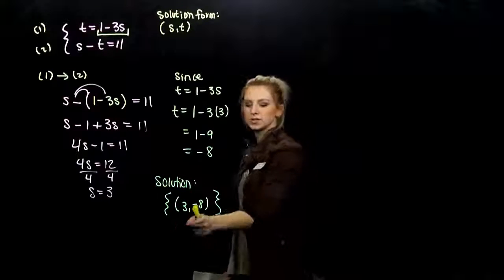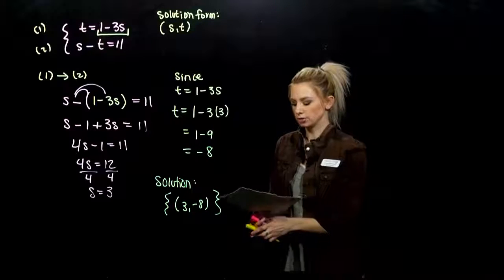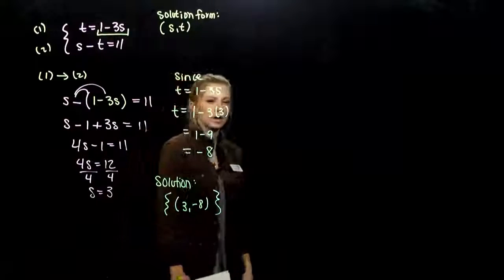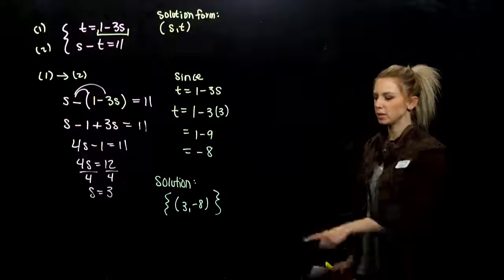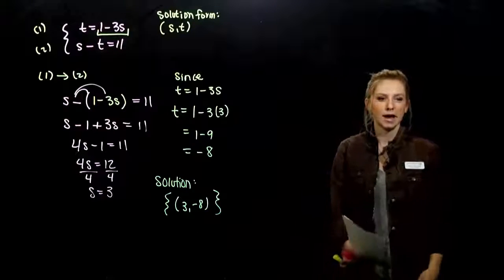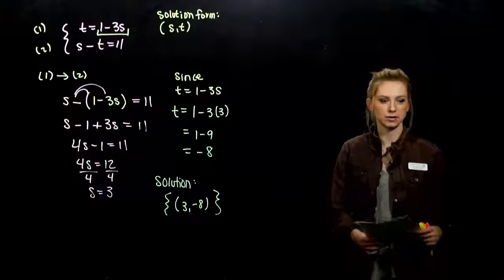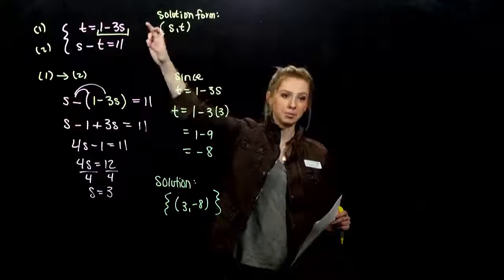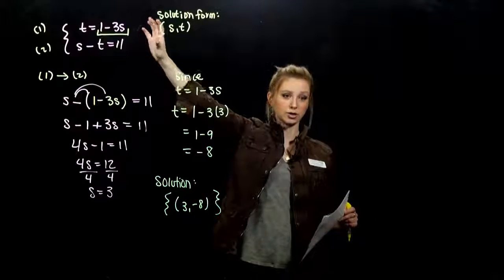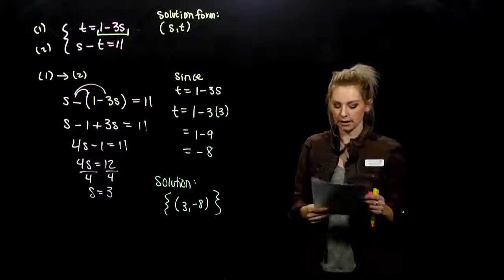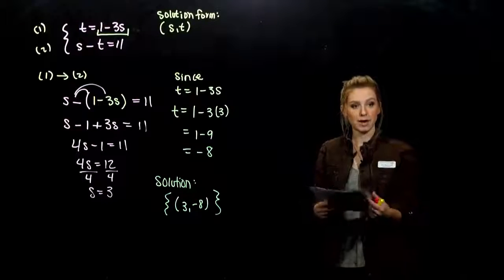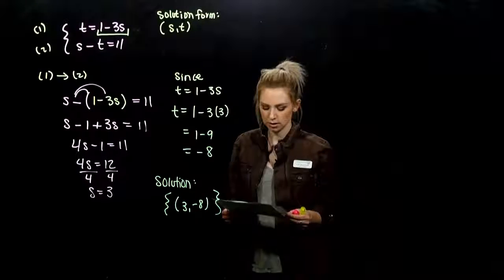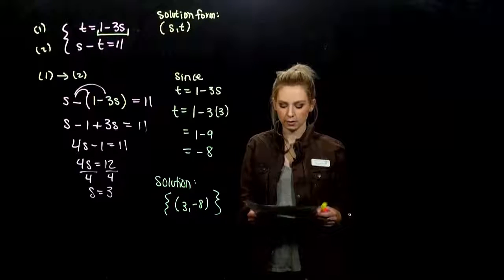This is the set of all solutions, and we only have one point that makes both true at the same time. But say you think you made a mistake and weren't confident with (3, -8). How could you double-check? Take these values, plug them back into both equations, and make sure both are satisfied at the exact same time. We always have checks in math to fall back on. Go ahead and work on the next two — solve those by substitution, don't graph them.